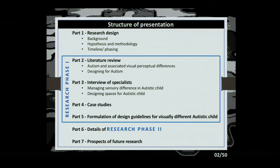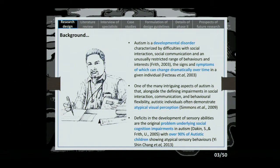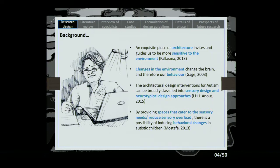From the medical side, it was observed that autistic children have atypical sensory perception. Mostly they have visual problems — they'll be either hypovisual or hypervisual. More than 90% of autistic children have atypical sensory dysfunction. From the architecture side, it was observed that changes in the environment change the brain and have the capability to influence behavior. We looked at design approaches for autism: the neurotypical design approach and the sensory design approach. By reducing sensory overload, we can possibly bring about some behavioral response in autistic children.